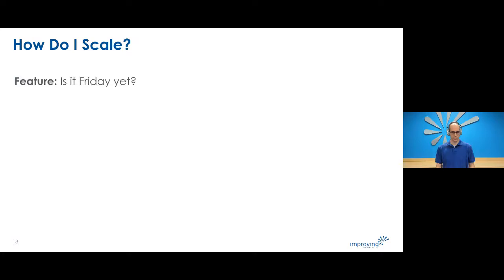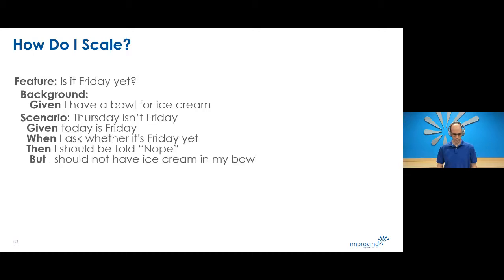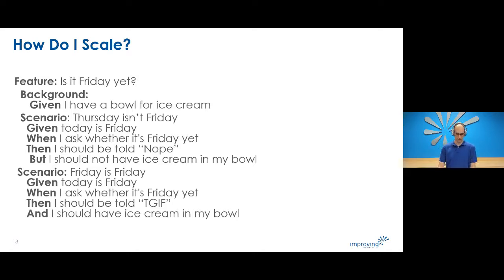Let's start with a background section. A background section in a feature file allows you to specify a set of steps common to every single scenario in the file, instead of repeating those steps over and over. You move them up into a background element and they fade into the background. There are a couple of advantages: if you need to change those steps you only change them in one place, and when reading each scenario you can focus on what's unique and important about it.